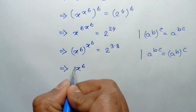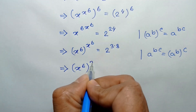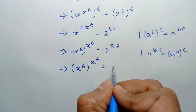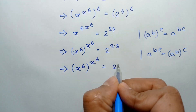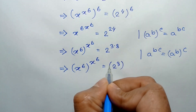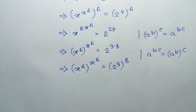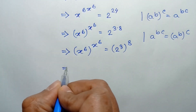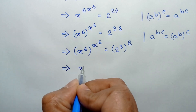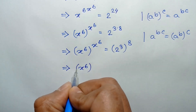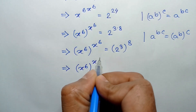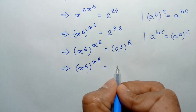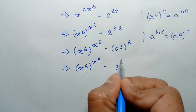So x to the power 6, whole to the power x to the power 6, is equal to 2 to the power 3, whole to the power 8. Since 2 to the power 3 is 8, this becomes 8 to the power 8.